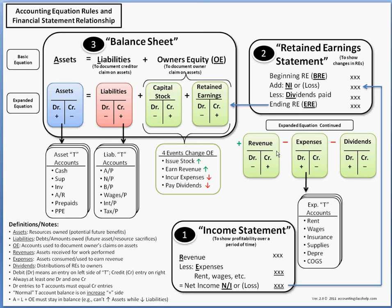In the expanded equation, we can see this shown with plus revenues, minus expenses, and minus dividends. We know those affect the retained earnings account, which in turn affects owner's equity.